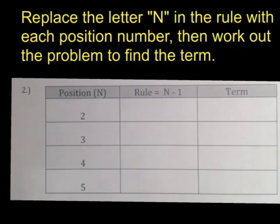Table number 2. We're going to follow the same steps. Replace the letter N in the rule with each position number. Then work out the problem to find the terms in the sequence. You do need to notice every single question the terms are different. They do not start with 0, 1, 2, 3, 4 again.